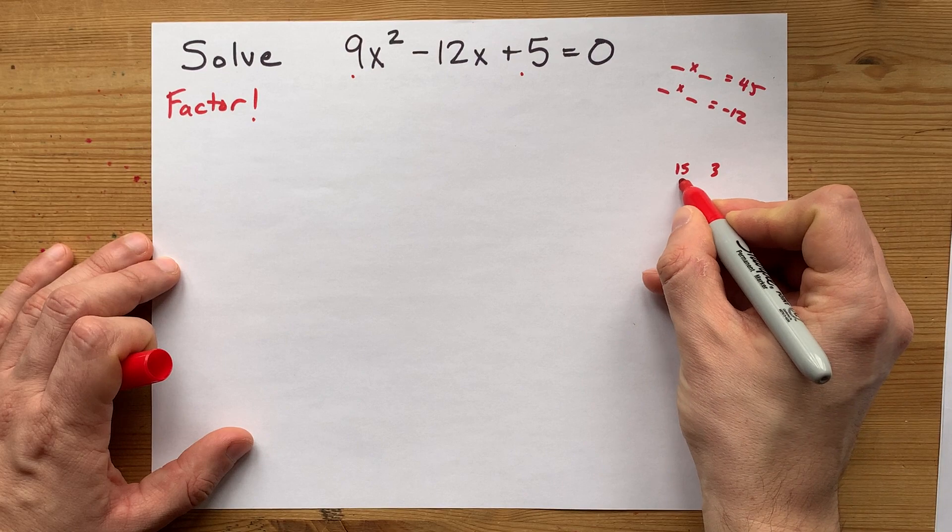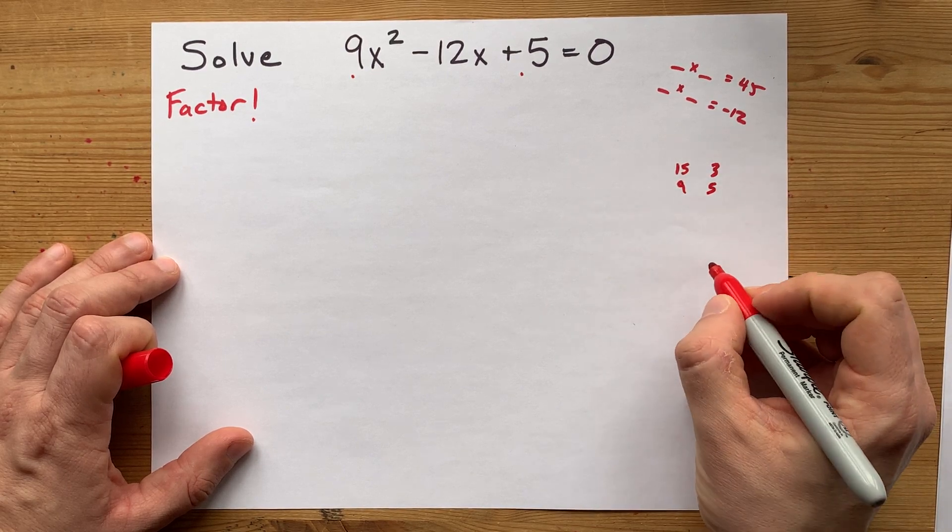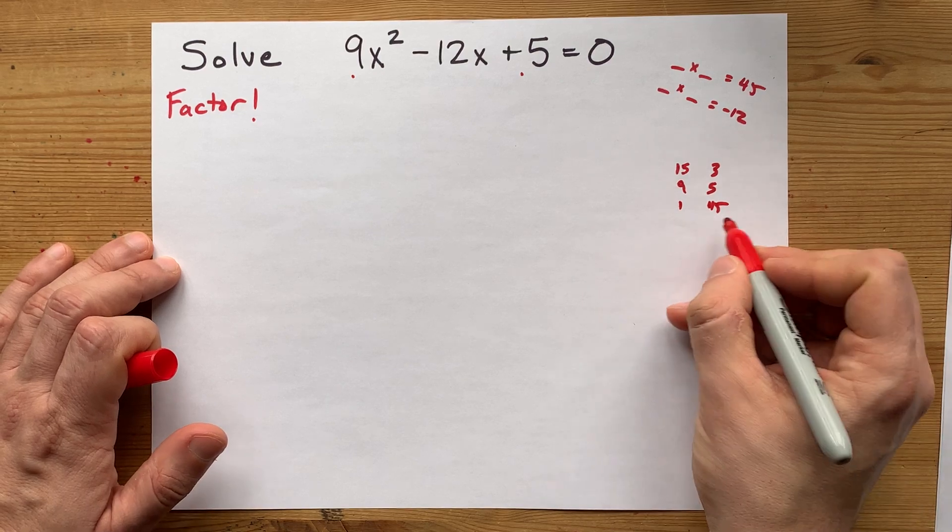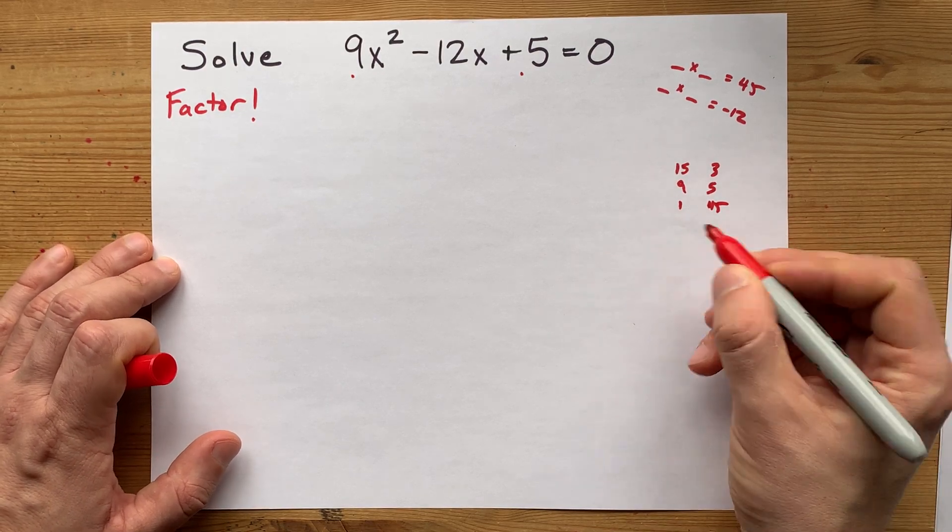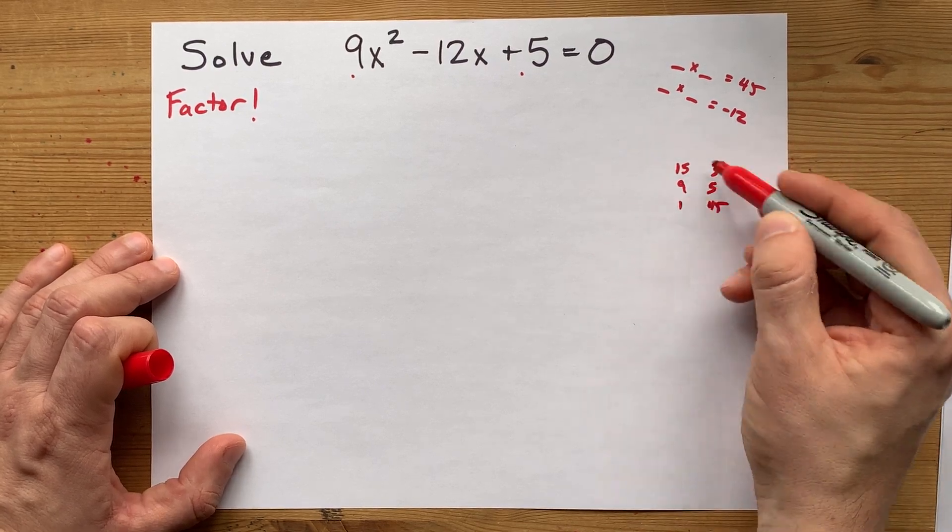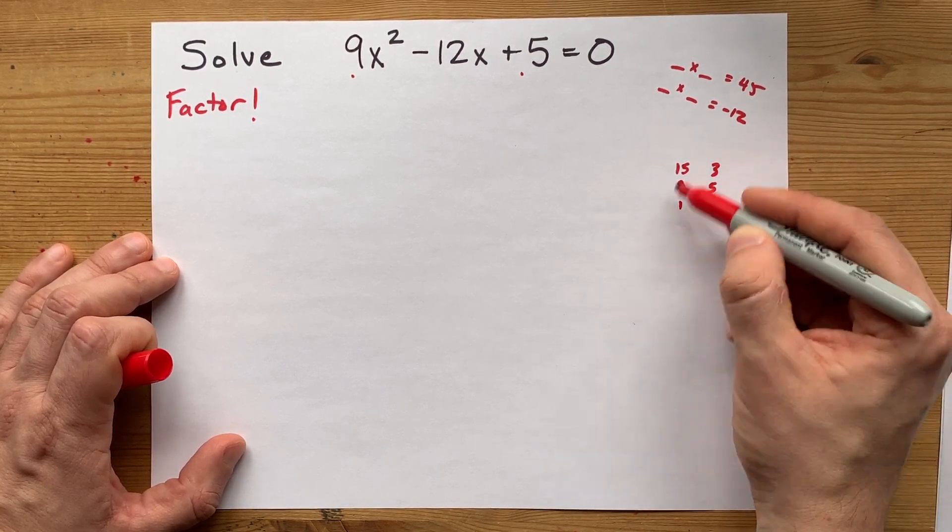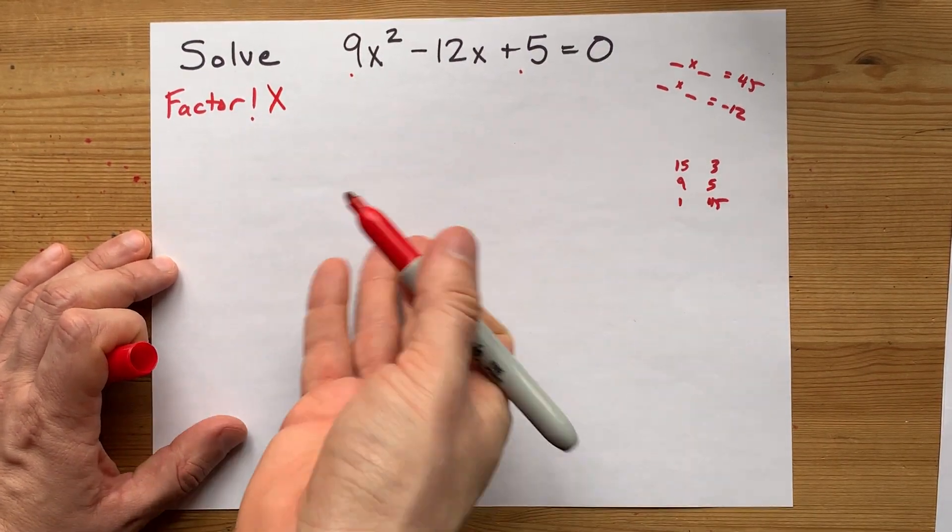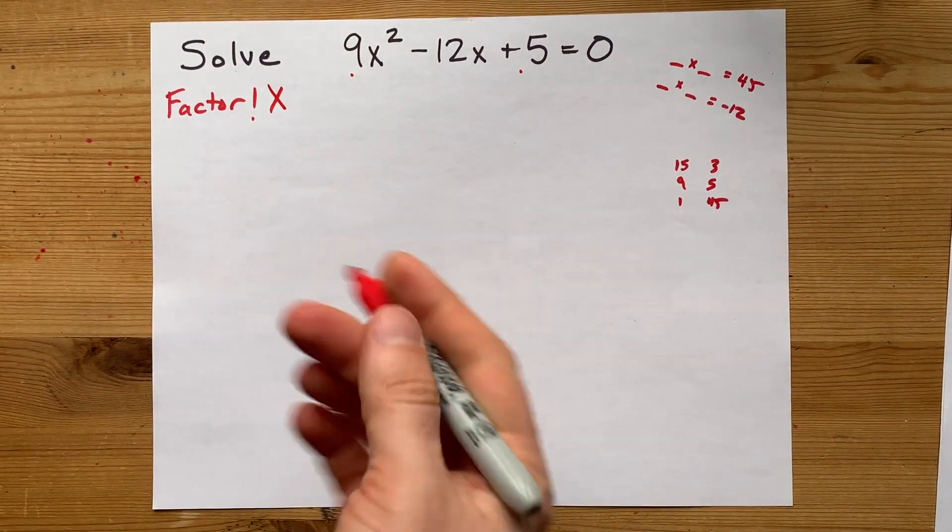What else multiplies to 45? You've got 9 and 5, you've got 1 and 45. Is that it? That's it. Those are the only pairs that multiply to 45, and none of them, if they multiply to positive 45, will add to negative 12, which means you can't factor. Which means the only option is the quadratic formula.